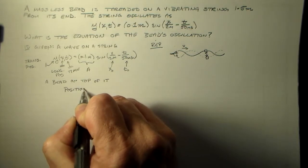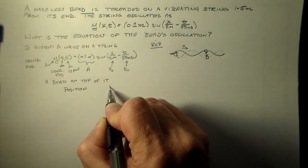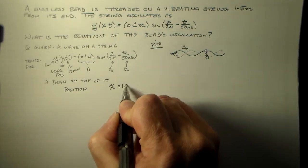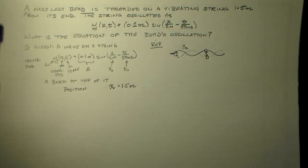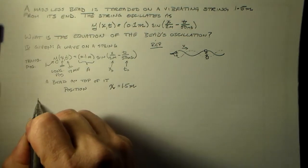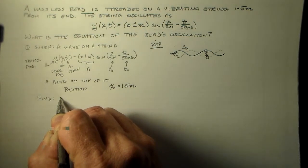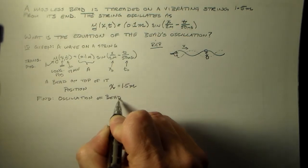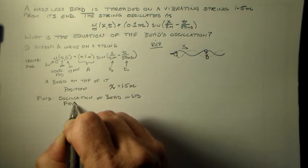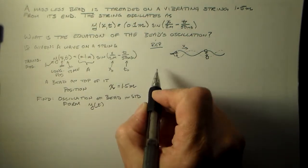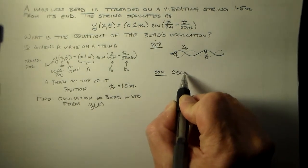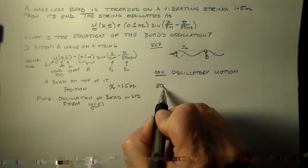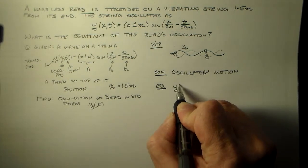I'll call it big x equals 1.5 meters. Okay, so that's all looking pretty good, right? We just want to find the standard form. Find the oscillation of the bead in the standard form, which is y of t. So the concept here would be oscillatory motion.